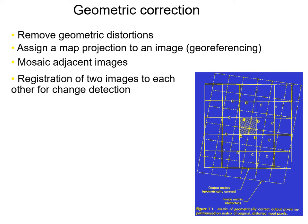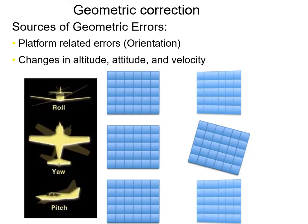The purposes of geometric correction are to remove geometric distortions, assign a map projection to the image — georeferencing — and then allow you to mosaic adjacent images and register images for change detection. Obviously, if you want to know how an area has changed, you need two images that line up very well. There's been work on how much error is introduced just by differences in registration between two images being compared. Sources of geometric errors include platform-related errors.